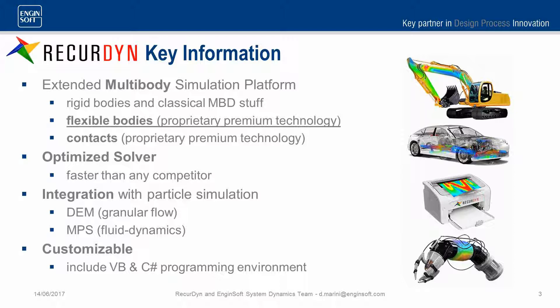Another very important feature is the contact technology. RecurDyne contains a very large library of contacts, both analytical and general, which can cover all the possible situations you might encounter. The optimized solver is the core of the technology — it allows solving extremely complex problems with thousands of contacts, faster than any competitor. RecurDyne can also be connected to both FEM and MPS particle simulation software, which can be really useful to simulate lubrication problems in chain transmissions. Lastly, the software contains a programming environment with which the user can customize the experience and write their own macros.